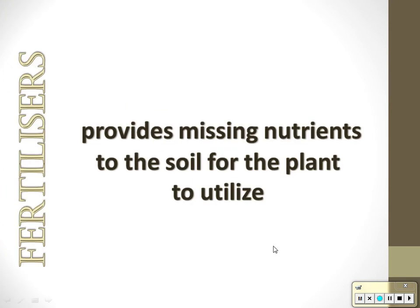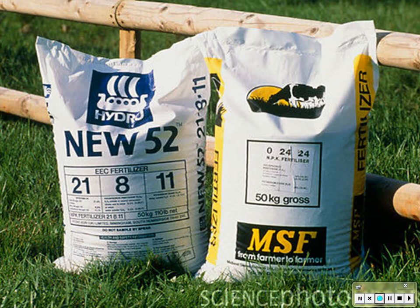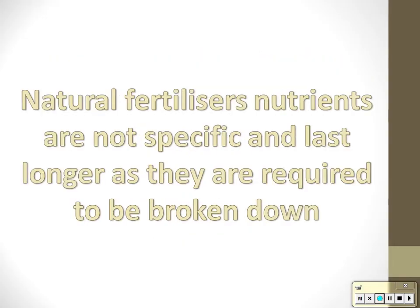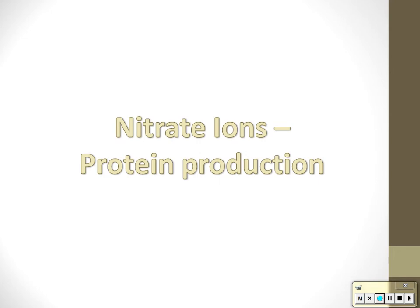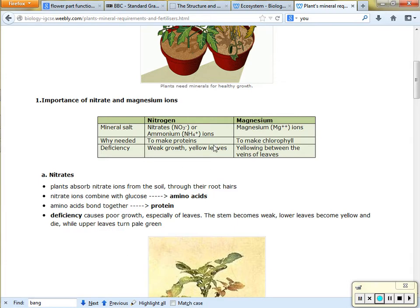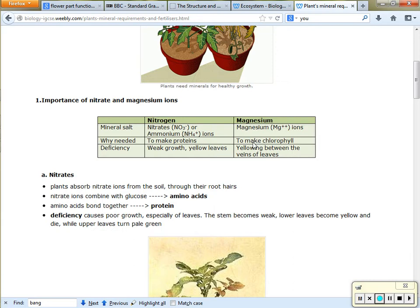Fertilizers provide missing nutrients to the soil for the plant to utilize. Chemical fertilizers deliver exact amounts of nutrients instantly — they are water-soluble and come with ratios of NPK: nitrogen, phosphorus, and potassium. Natural fertilizers are not specific and last a lot longer because they have to be broken down first — think cow manure. Nitrate ions in fertilizer are used for protein production; a lack means poor growth. Magnesium ions are used for chlorophyll production; a lack normally means yellow leaves.